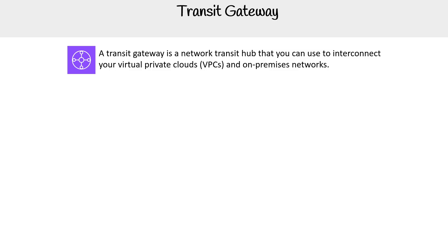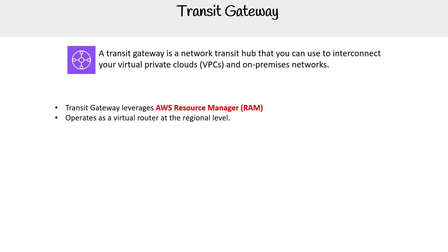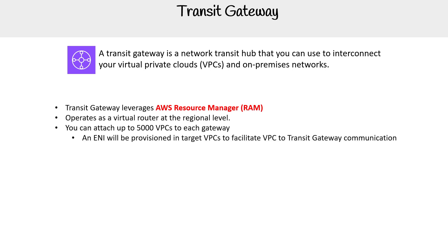A transit gateway is a network transit hub that you can use to connect your virtual private cloud, or VPC, and on-premise networks. Transit gateway leverages AWS Resource Manager and operates as a virtual router at the regional level. You can attach up to 5000 VPCs to each gateway. For each connection to each VPC, it spins up an ENI — that's how VPC-to-transit-gateway communication works. This is important because it can factor into costs or hitting limitations if you're restricted on the number of ENIs in your VPC.